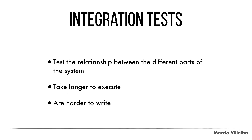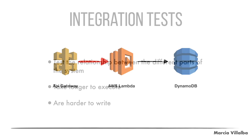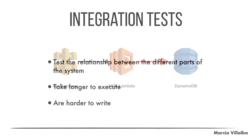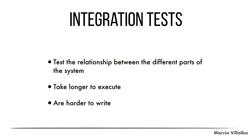Integration tests are tests that test the individual relationships between different parts of a service — how different services are connecting. In the serverless world, for example, how our Lambda is connecting to Dynamo, how our Lambda is connected to API Gateway, how all these integrations are working one by one. Integration tests usually take a little longer to execute and they're harder to write.